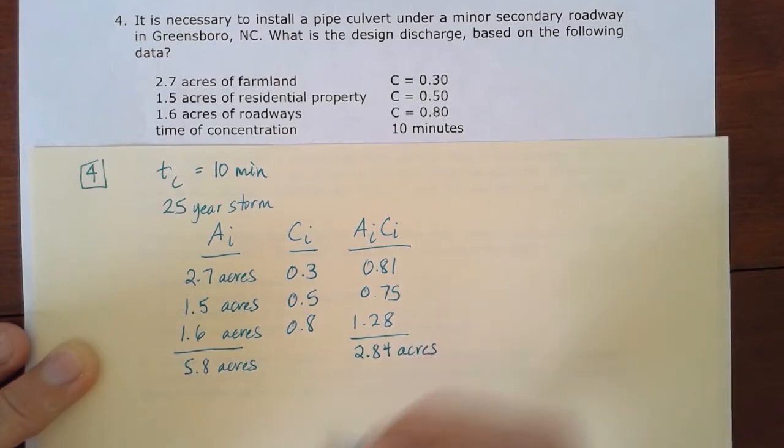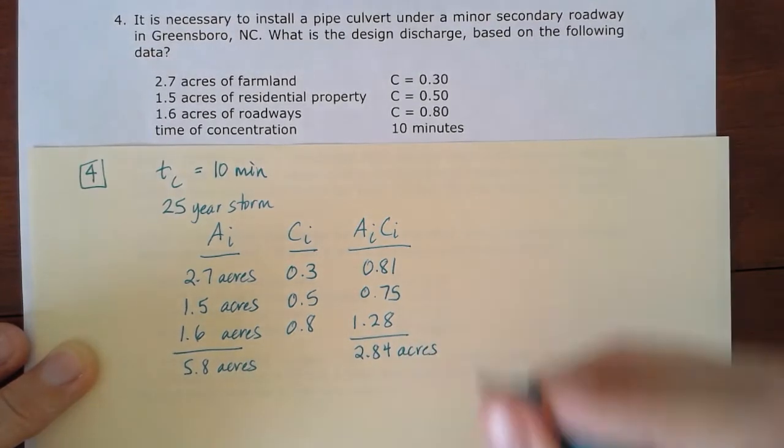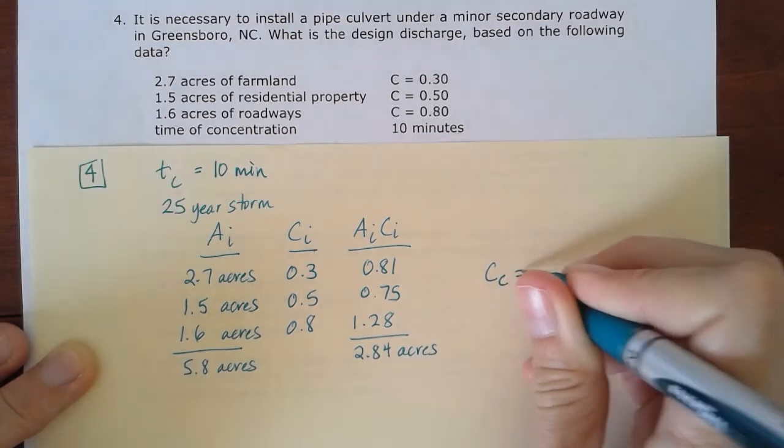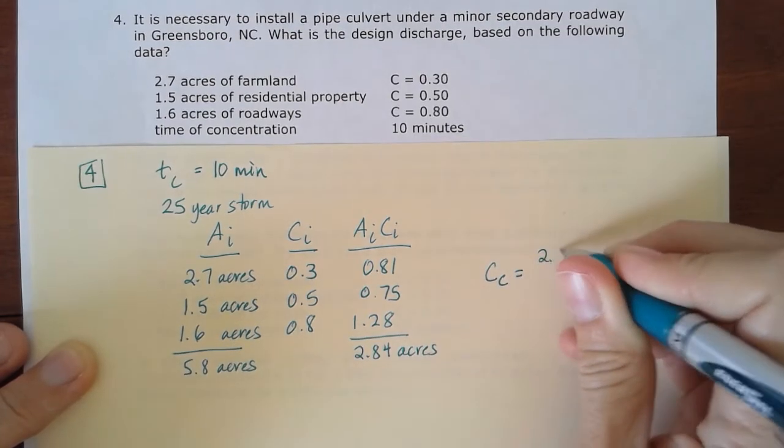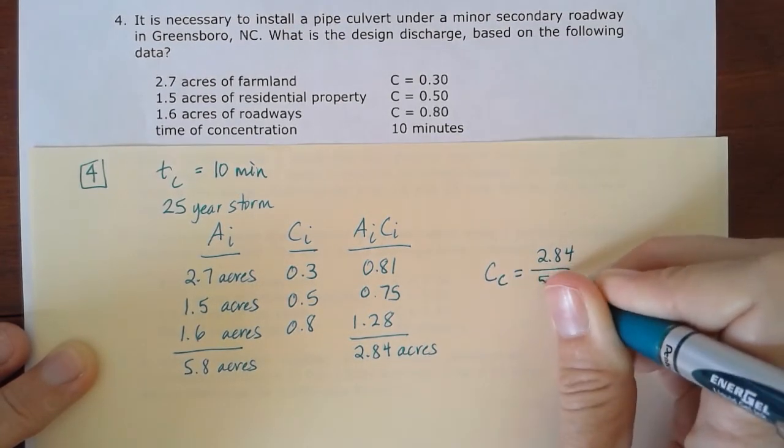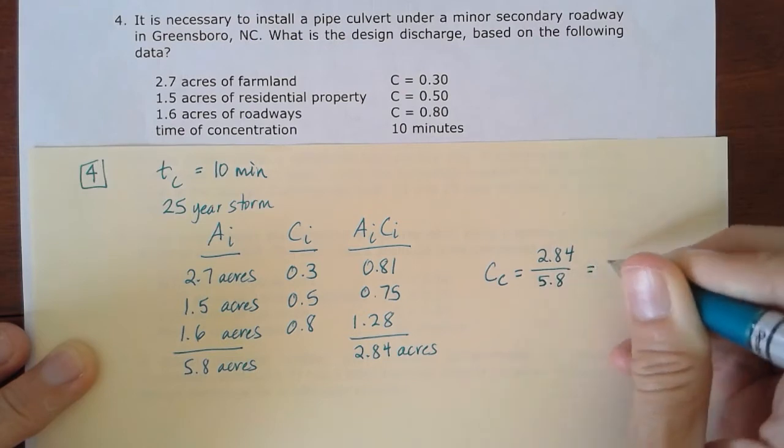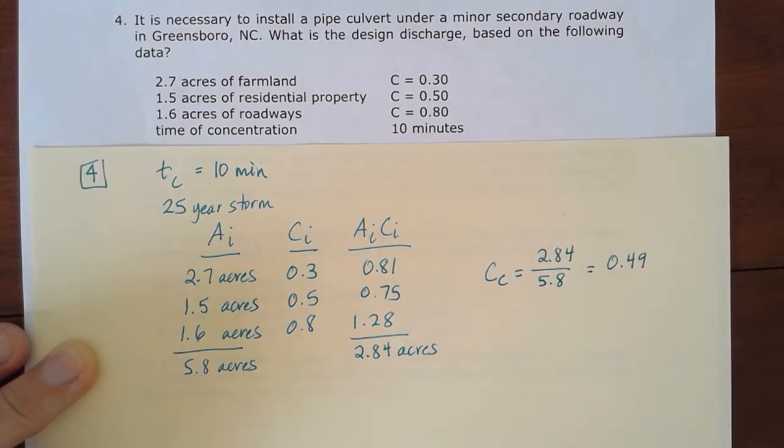And so we'll divide those by each other to find that overall composite coefficient. So 2.84 over the 5.8. The acres will cancel out. And we get 0.49, rounded to two decimal places there. So now we've got all that information, but we still have to find that intensity.